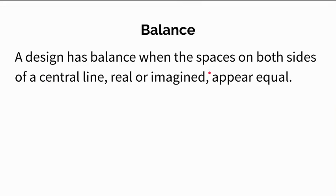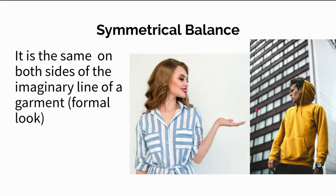The first one I want to talk about is balance. When we talk about balance, we're talking about when a design or garment, a pattern on a garment, any of that — it's in balance when the spaces on both sides of a central line, whether it's real or imaginary, they appear equal. There are two different types of balance we're going to talk about.